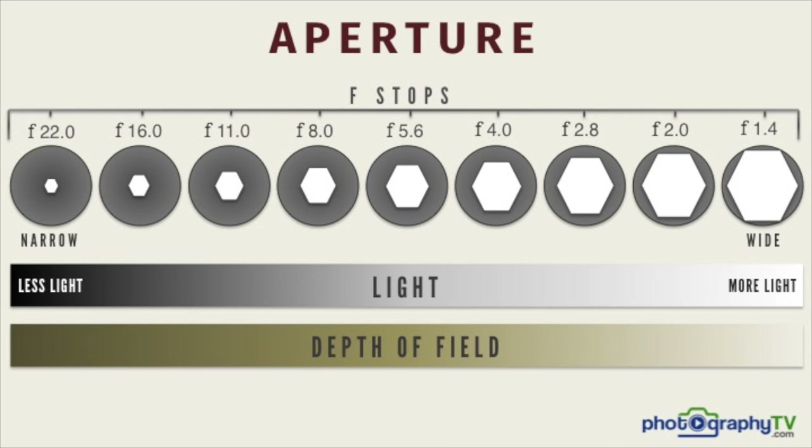Now that we understand how much light is going through the lens, let's talk about the effect that aperture has on photographs — and this is with the depth of field. Depth of field is really just a fancy way to say how much of your scene is in focus. If you think about the depth in a scene and take a picture of me with trees and depth in the background, the aperture will control how much behind me is also in focus.